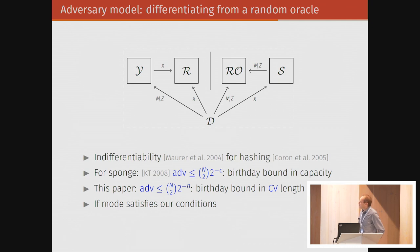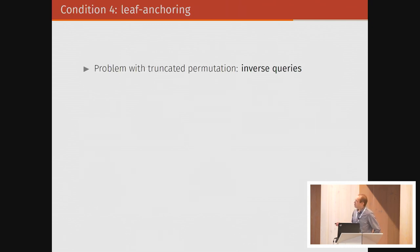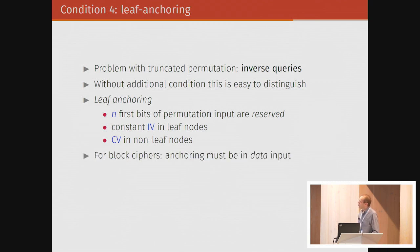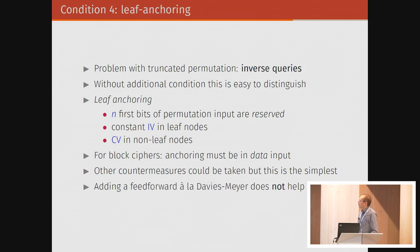We get this bound if the mode satisfies our condition. But there's one condition I didn't mention, the additional condition for block ciphers and truncated permutations. Then we can do inverse queries, which we cannot do when a compression function is XOF or a hash function. Without this additional condition, you cannot build a good simulator because the simulator cannot know what's going on as soon as people start doing inverse queries. Then we need an additional condition, which is leaf anchoring. Leaf anchoring means that the n first bits of the permutation are reserved. Either they are a constant IV in leaf nodes or they are a CV in non-leaf nodes. For block ciphers this also applies, but this anchoring must be in the data input, not in the key input. You can take other countermeasures, but this is the simplest. One countermeasure that doesn't work is a Davis-Meyer feed forward. That doesn't work. It doesn't work against us.